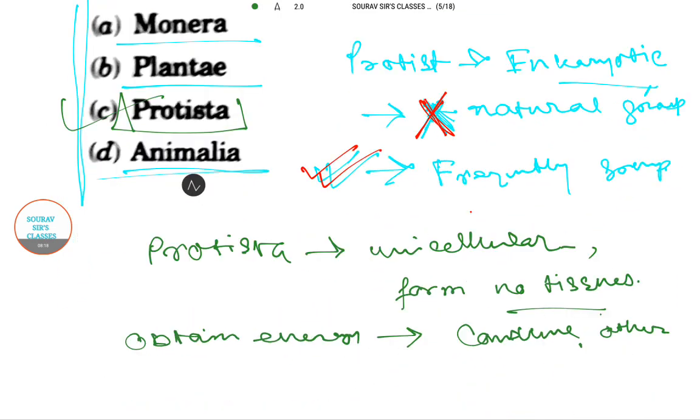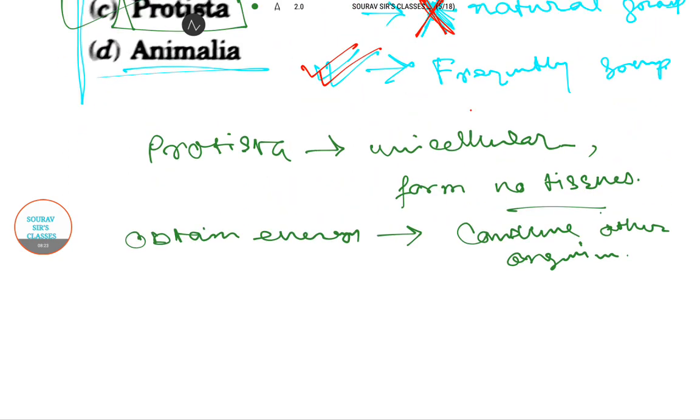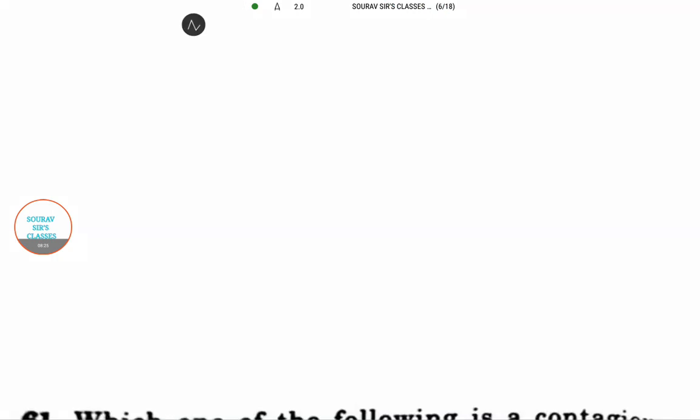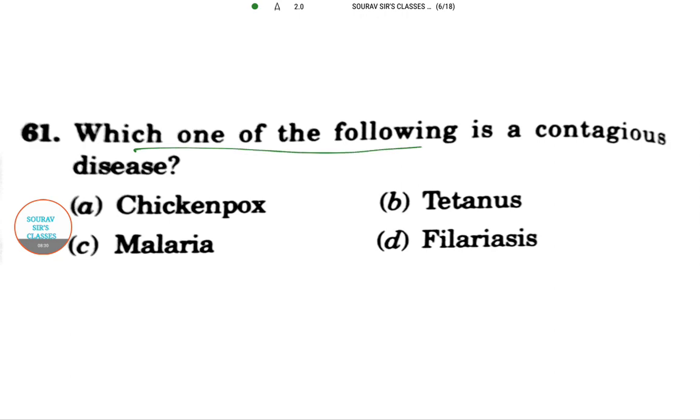Moving to the next question: which one of the following is a contagious disease? The options are chickenpox, malaria, tetanus, and filariasis. We all know that chickenpox is highly contagious, so the answer is option A.